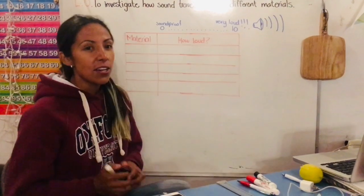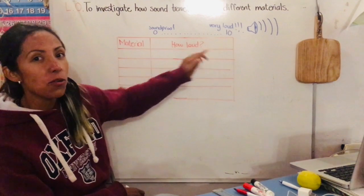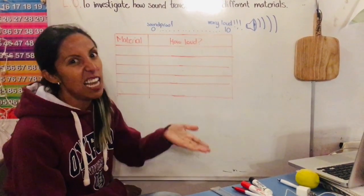Don't forget your ruler. We will also need to draw this table. One side says material and the other side says how loud is it.